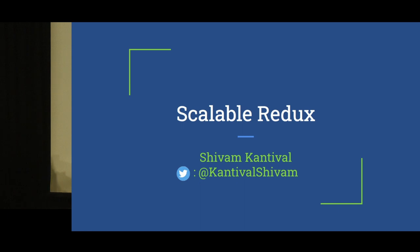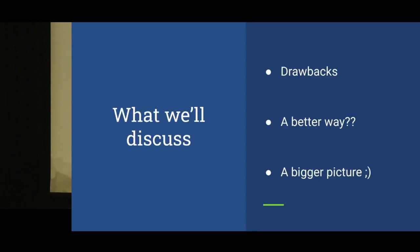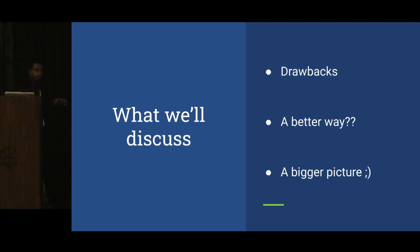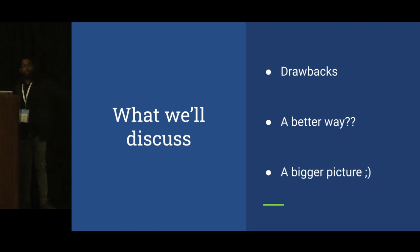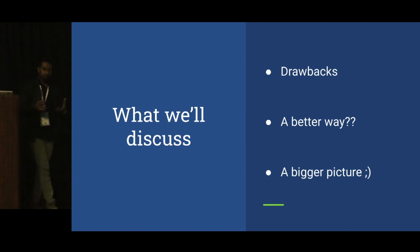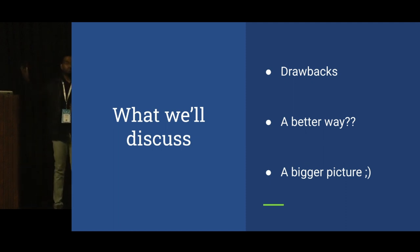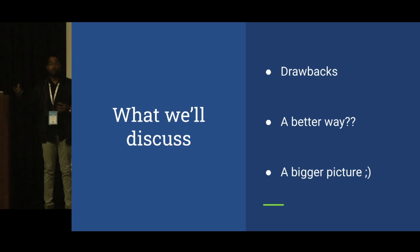There are three major points we want to talk about today. First, we want to establish some drawbacks in the current architecture of Redux — how we use it currently. Second, is there a better architecture we can use to solve those problems? And last but not least, we want to take a look at the bigger picture: can we apply what we learn today to other things as well, beyond just Redux?